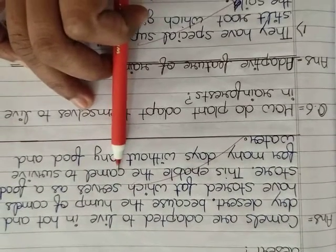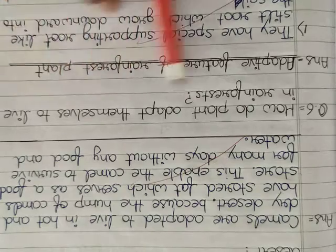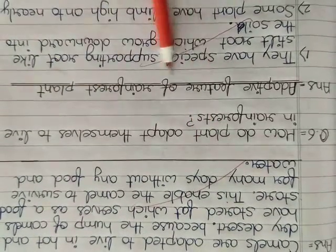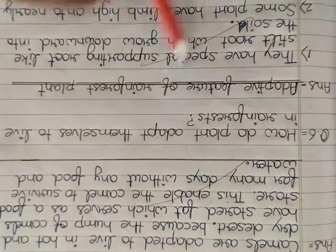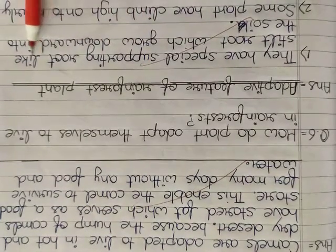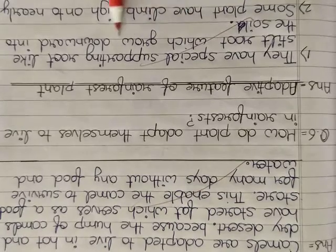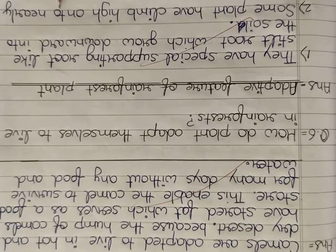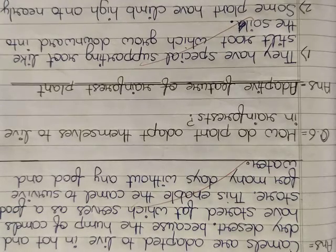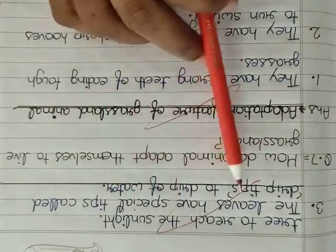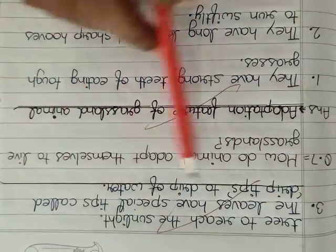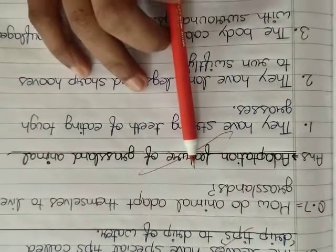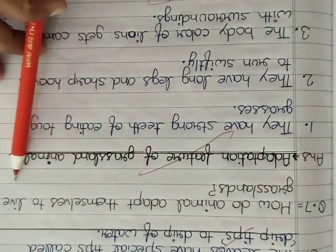Next question is How do plants adapt themselves to live in rainforest? Adaptive feature of rainforest plants. They have special supporting root like stilt root which grow downward into the soil. Some plants have climbed high onto nearly tree to reach the sunlight. The leaves have special tips called drip tips to drip off water.